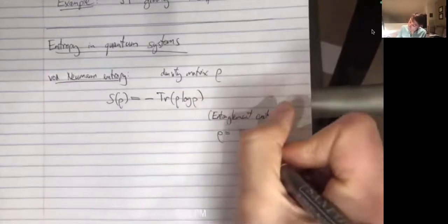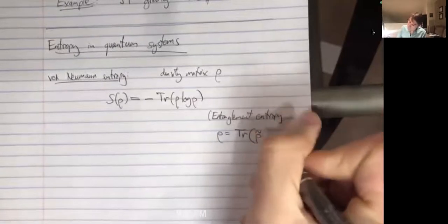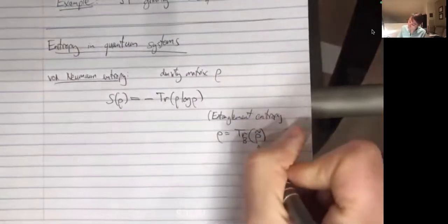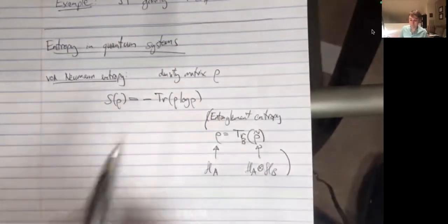Suppose we have some system with a density matrix rho describing the state of the system. Then the von Neumann entropy — I'll always use S to mean the von Neumann entropy — is minus the trace of rho log rho. In Tadashi's talk, he's already explained that this is sometimes called entanglement entropy, particularly in the case where rho is the reduced density matrix: you have rho-tilde living in some Hilbert space A tensor B and you trace over B. This is called entanglement entropy because it quantifies the entanglement between A and B if rho-tilde is a pure state. But I'll use the more general term von Neumann entropy because it's useful even when it doesn't necessarily always quantify entanglement.